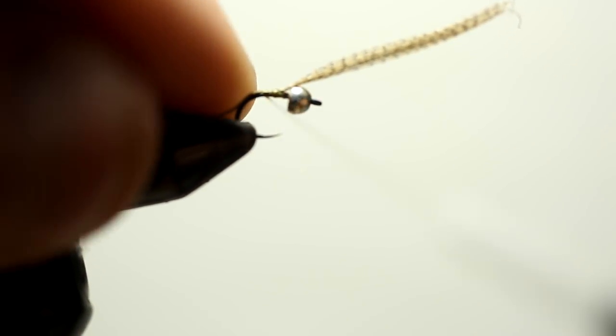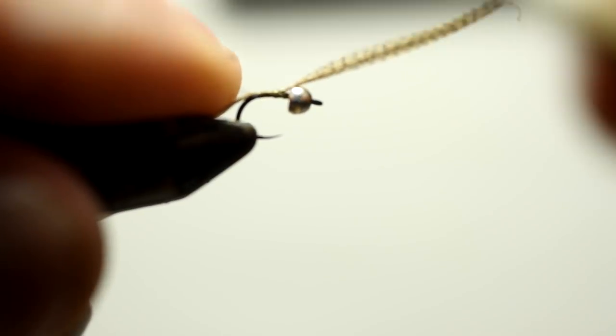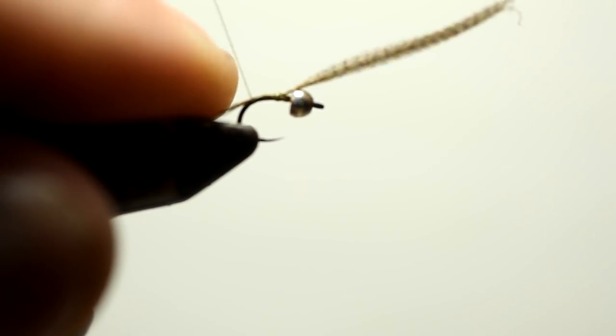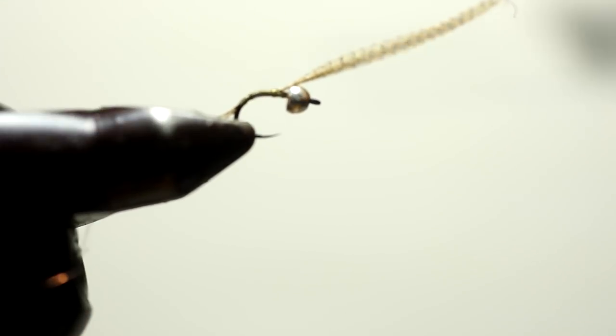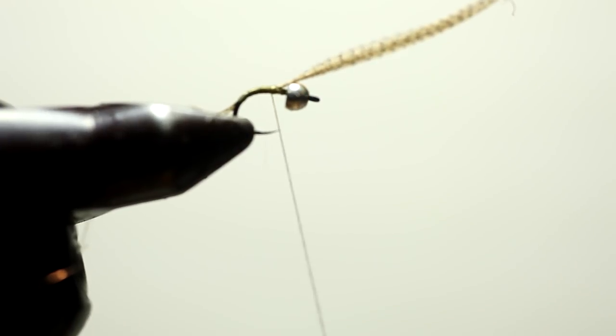I think that having a hook that's black, because it's not as shiny and smooth as the bronze hook, actually holds into the fish better because the metal's not as slippery. For the ribbing on this one we're going to use small copper wire.